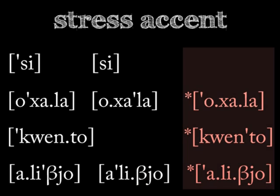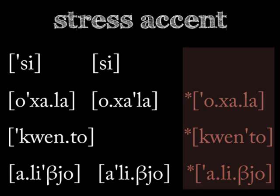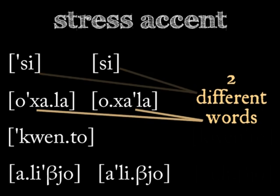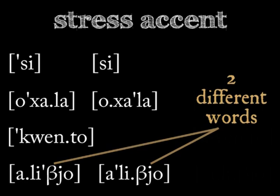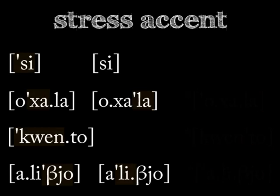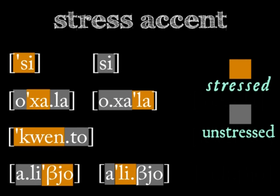The words on the right hand side are marked with an asterisk and they don't exist in Spanish. So how does stress work in Spanish? Accent plays some role in Spanish, but moving the accent to a different syllable doesn't always generate a new word. Some syllables are stressed, but others are unstressed.